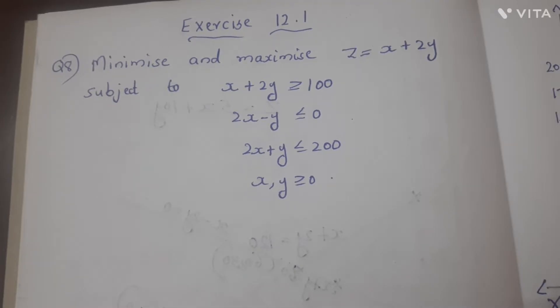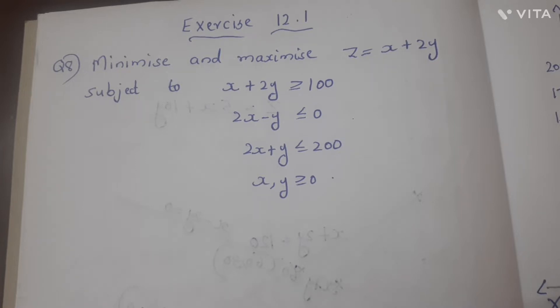Minimize and maximize Z equal to x plus 2y, subject to 3 conditions. Here we have a minimum point and a maximum point. Let's find the minimum point and maximum point.